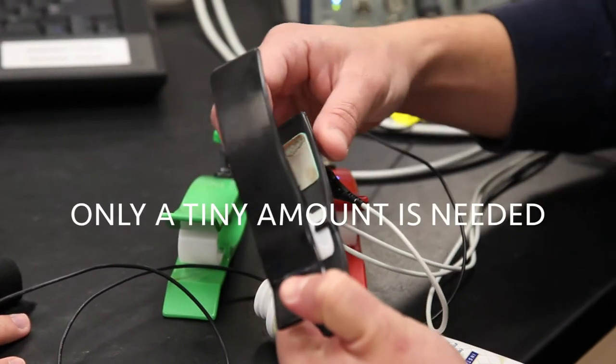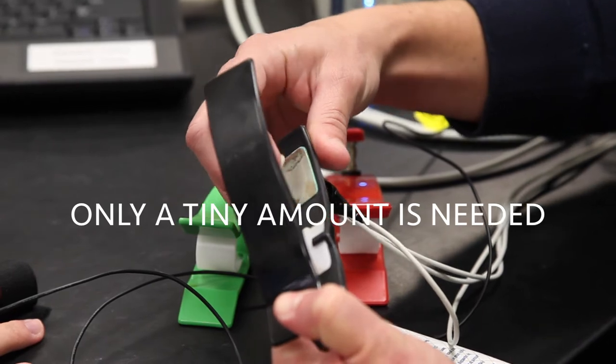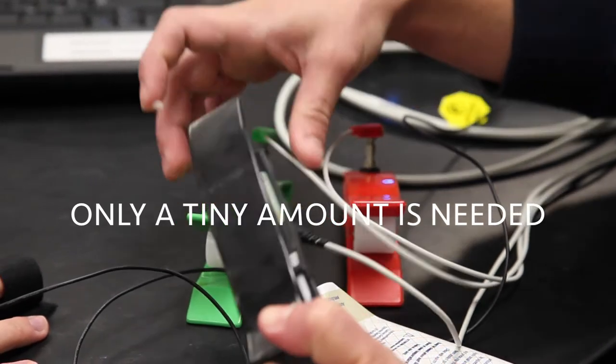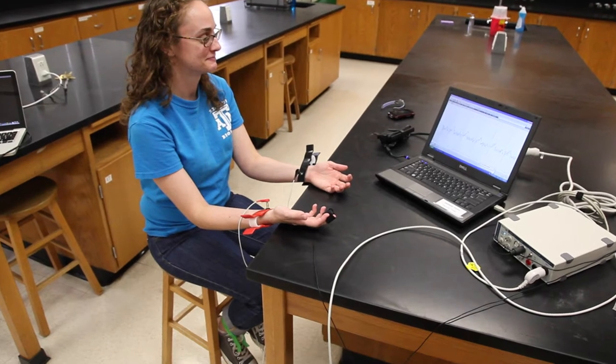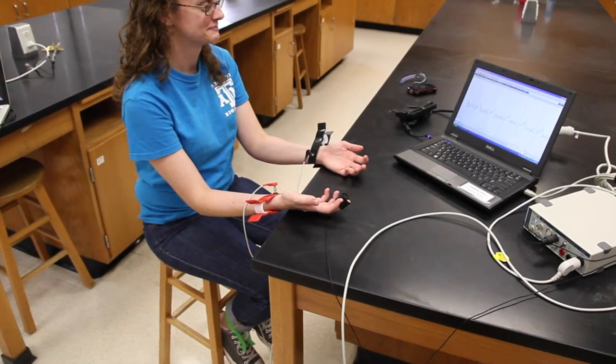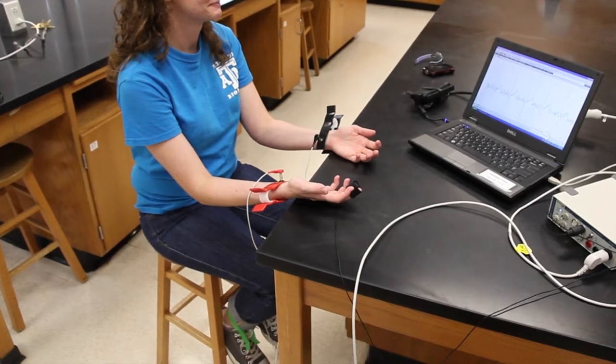Spread a thin film of electrode gel over the surface of the electrodes. Here the black electrode is placed on the left wrist while the red electrode is placed on the right wrist. The green electrode is placed on the right ankle.